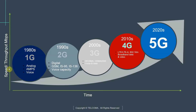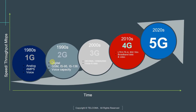On the y-axis here, you have the speed and throughput in megabits per second, and on the x-axis here, you have time. As time has passed, we have seen different generations of technologies coming in, and with every subsequent technology, there has been a significant improvement in throughput.